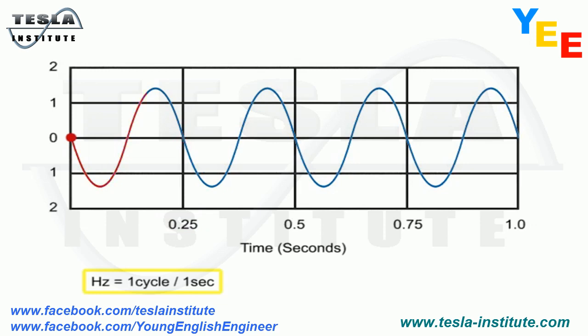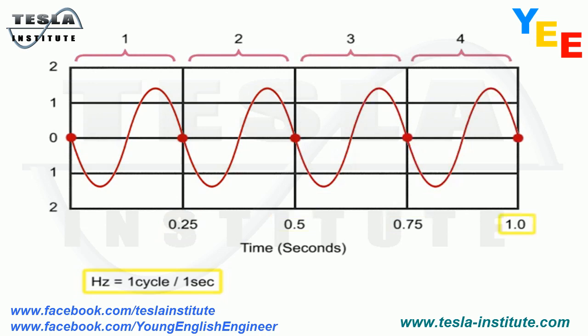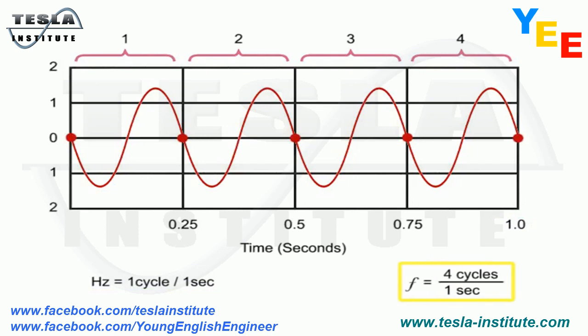A Hertz is equal to the number of wave cycles occurring in one second. For this wave, there are four cycles in one second. Given that frequency is one over T, or period, the frequency is four cycles in one second, or four Hertz.